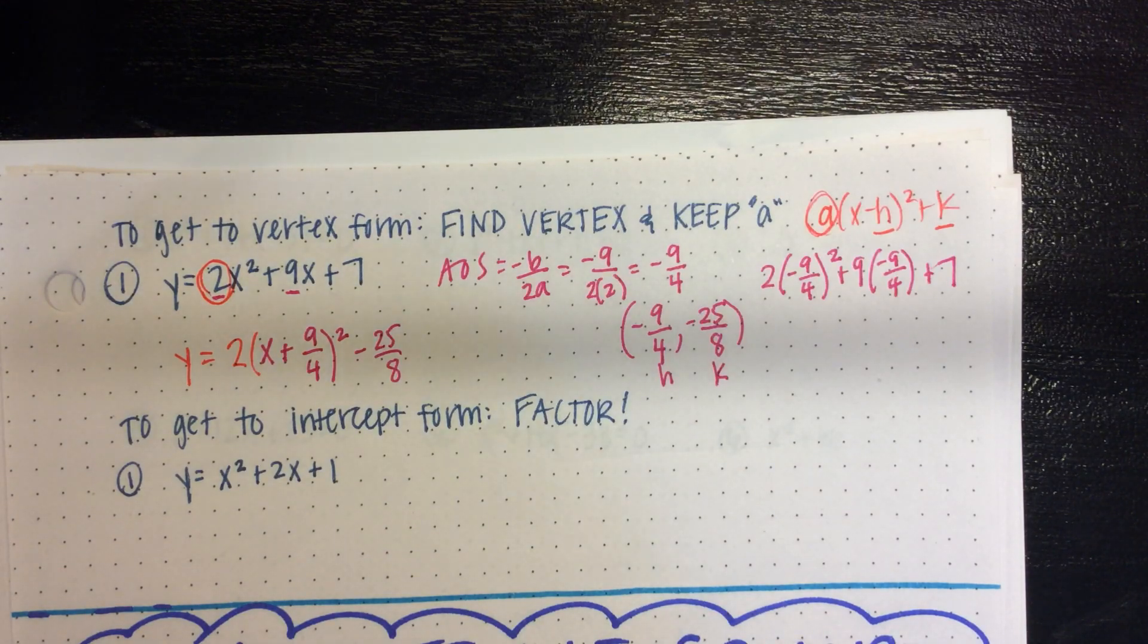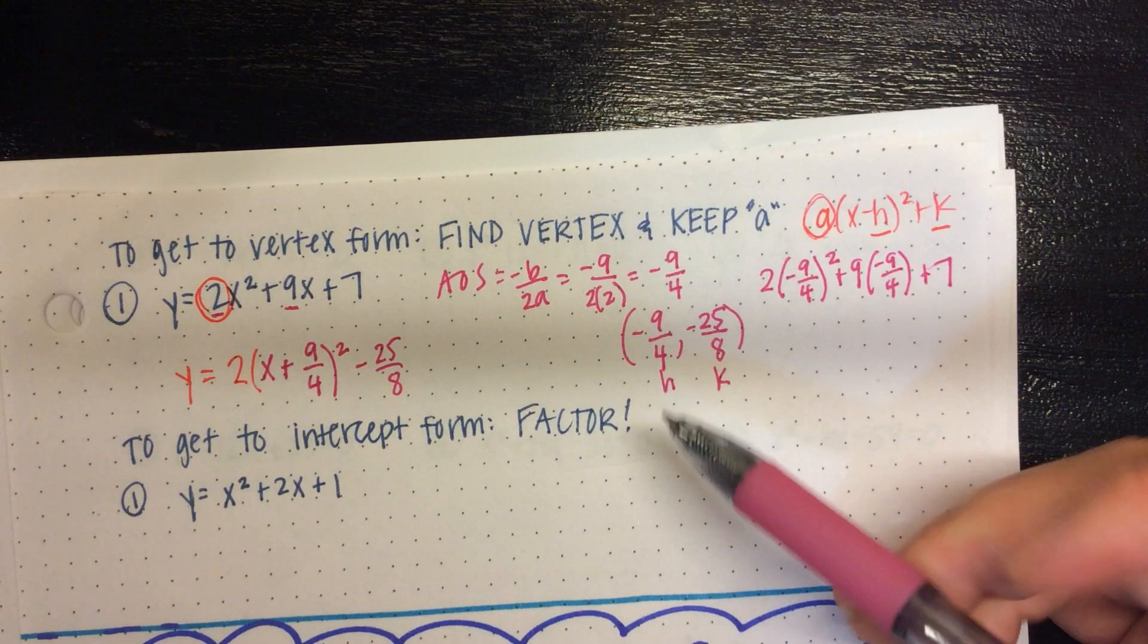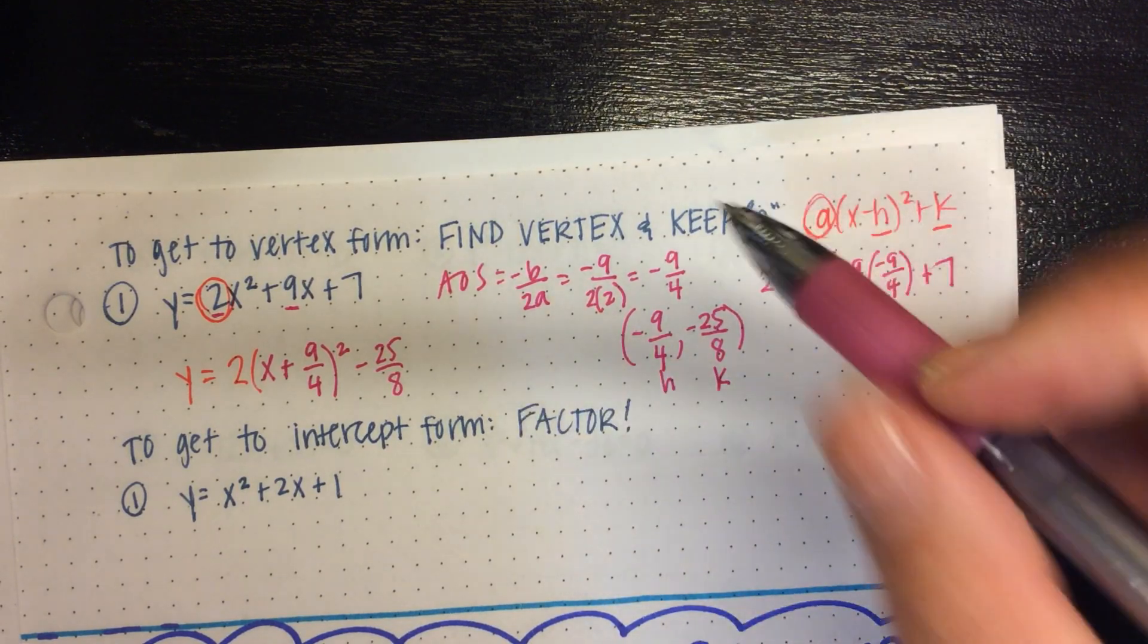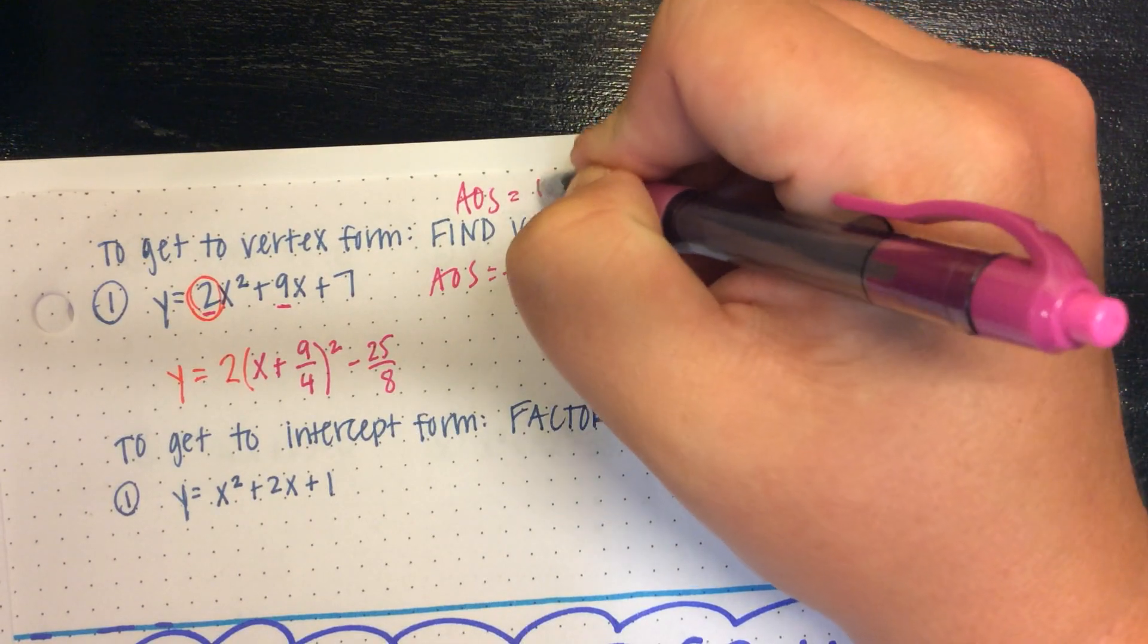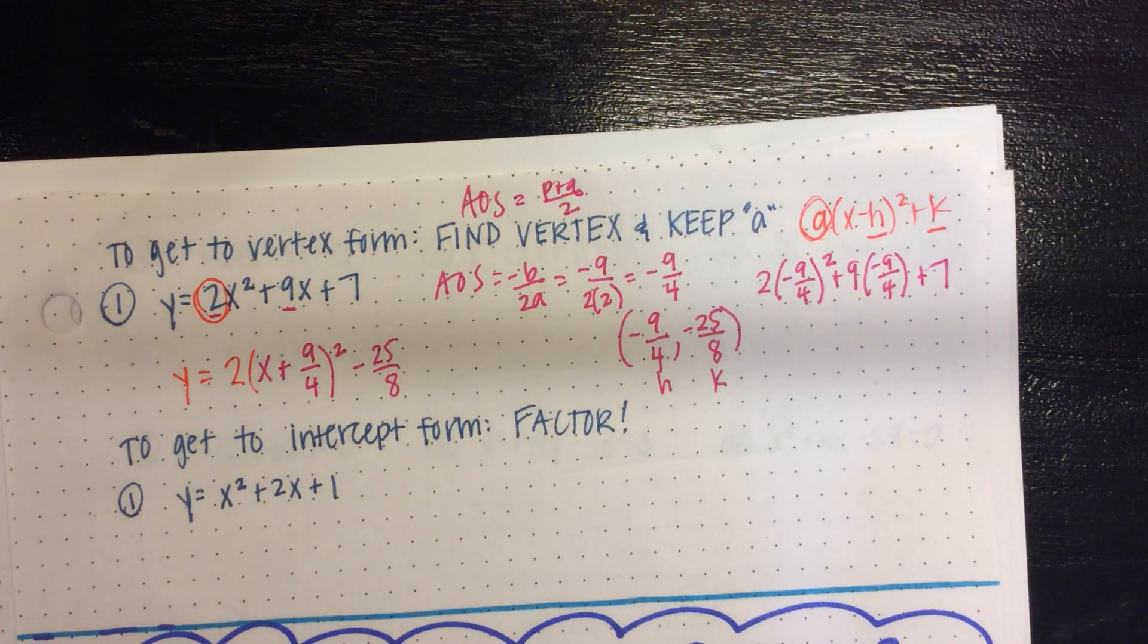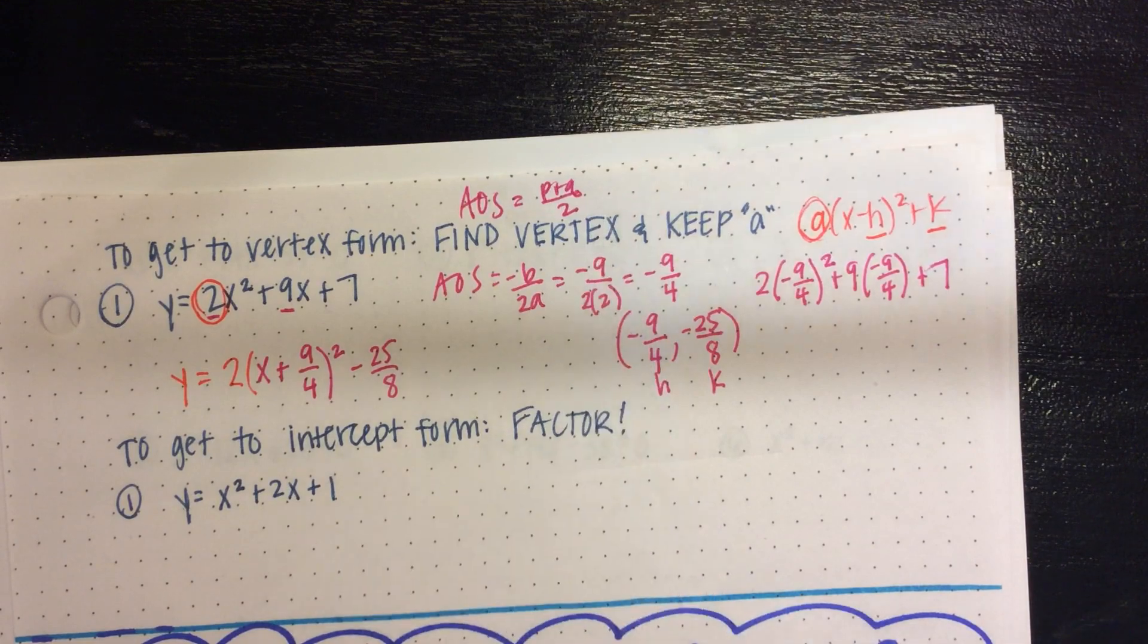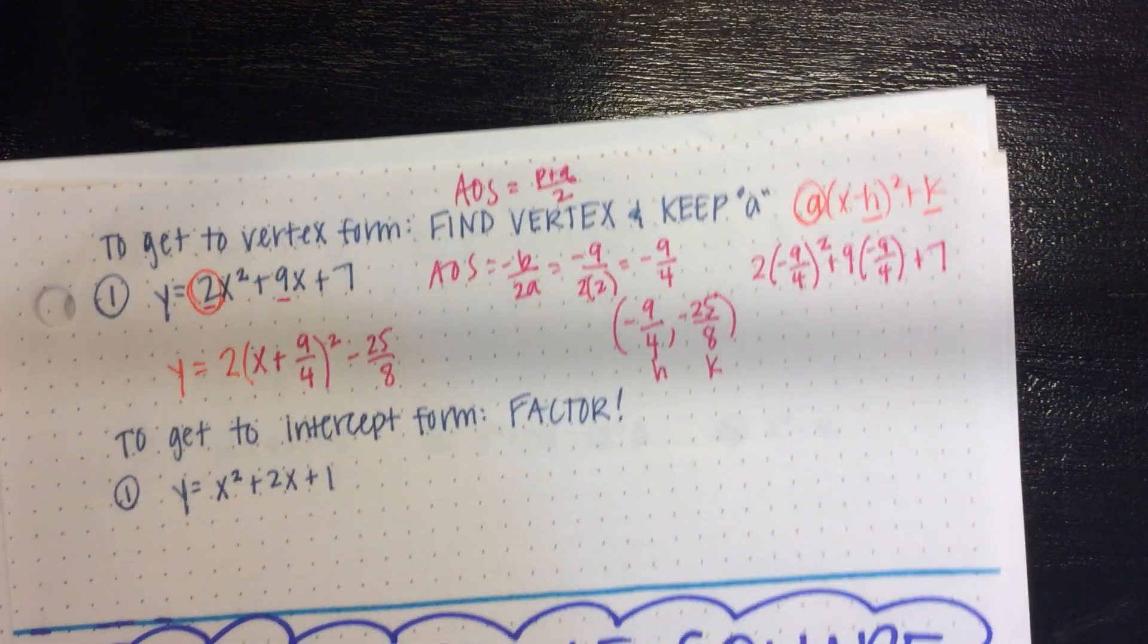The ones you're going to see on delta math are prettier than that. Your assignments. I don't know why I did that. If it's in intercept form, same steps except the AOS in intercept form is that p plus q divided by 2. So you still use the same a value, and then you find your AOS and plug it in to find your vertex.